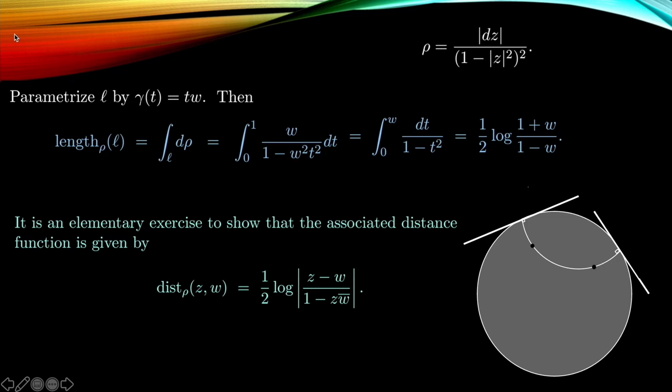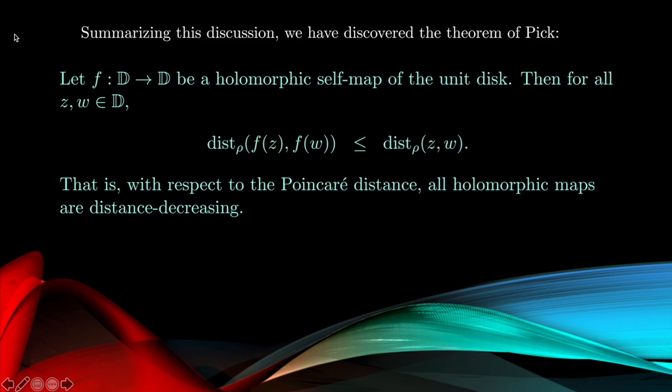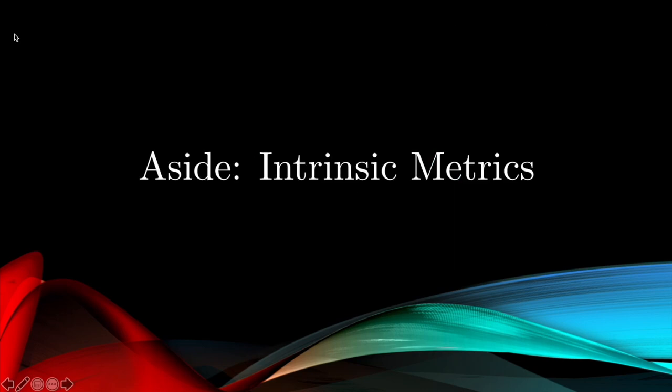So if we summarize this discussion, what we've essentially done is recovered the following theorem of Pick, which is referred to as the Pick-Schwarz lemma. Namely, that if we take a holomorphic map from the unit disk to itself—I'm just going to assume the radius is one which does not necessarily fix the origin this time—then the inequality we proved before using the fractional linear transformations says that the distance function with respect to the Poincaré metric decreases under holomorphic maps. So all holomorphic maps are distance-decreasing with respect to the Poincaré metric.